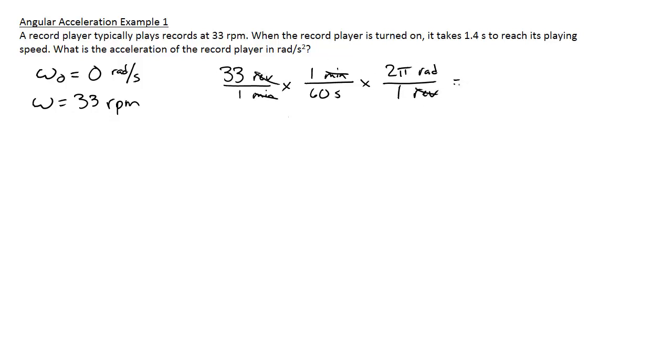If I cancel out the revolutions, I would get radians per second. I'm not going to leave it in terms of pi; I'm going to multiply it times pi and get a decimal equivalent. So 33 times 2 pi divided by 60 seconds gives us 3.456 radians per second. That's our final angular velocity.